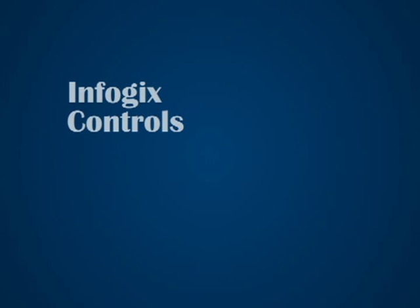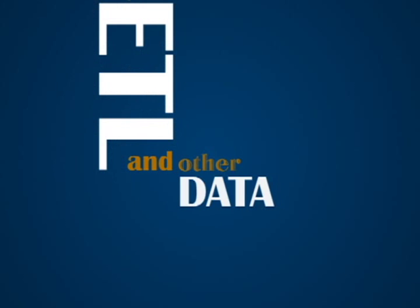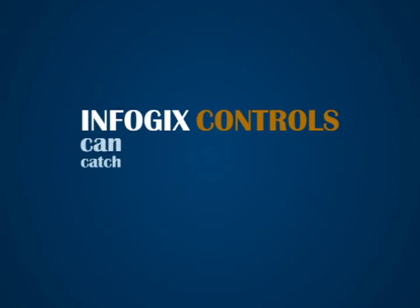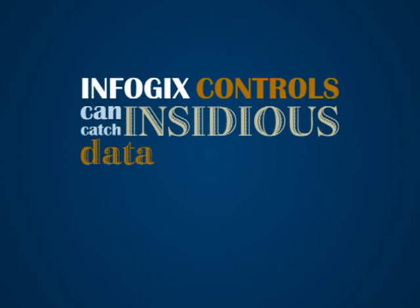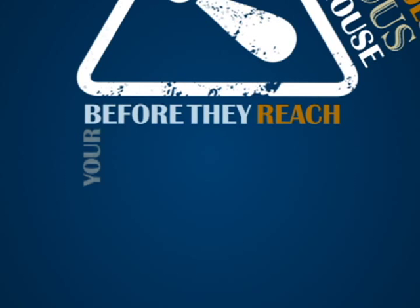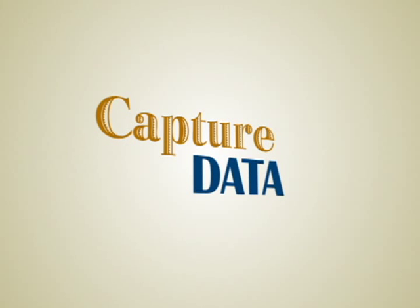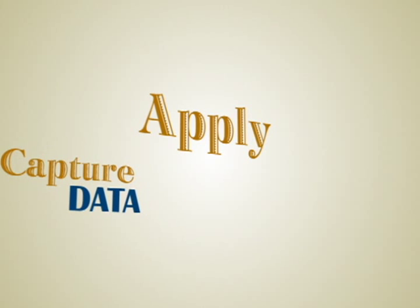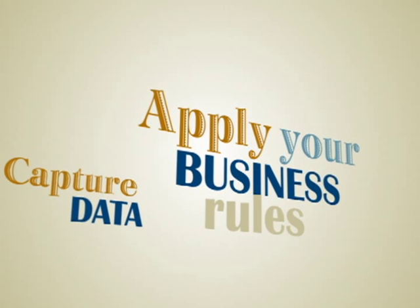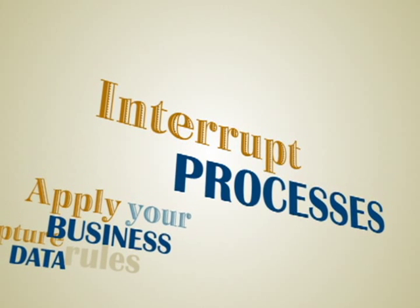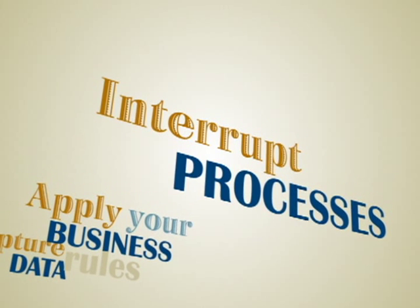InfoJix Controls are independent of your ETL and other data warehouse tools. InfoJix Controls can catch insidious data warehouse errors before they reach your business users and customers. InfoJix Controls capture data from relevant sources, apply your business rules to detect errors, and interrupt processes before incorrect information propagates.